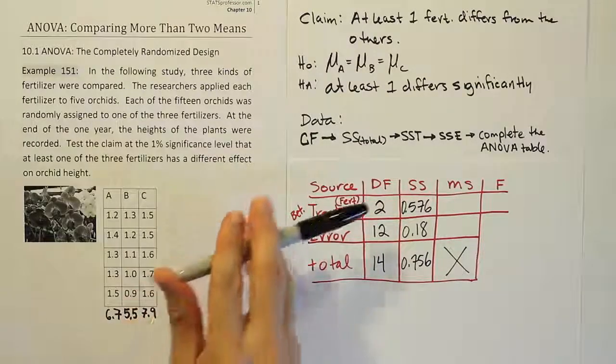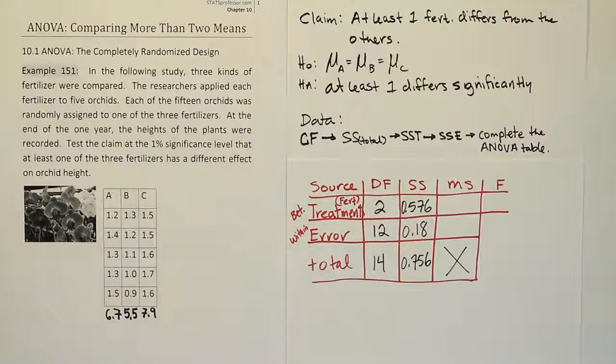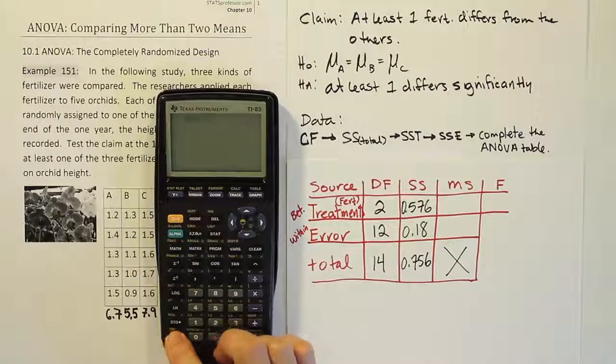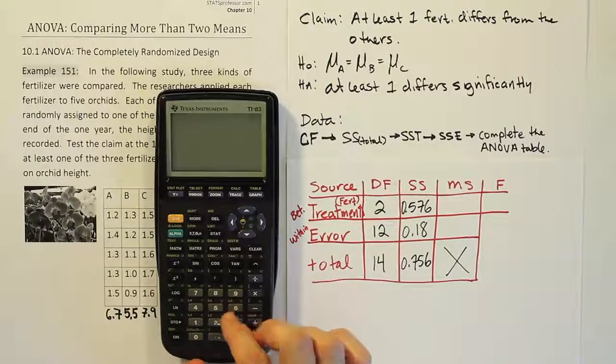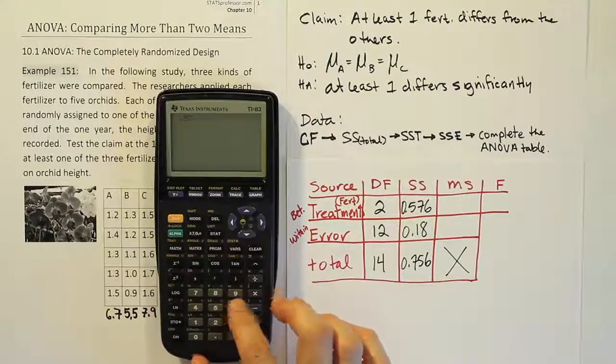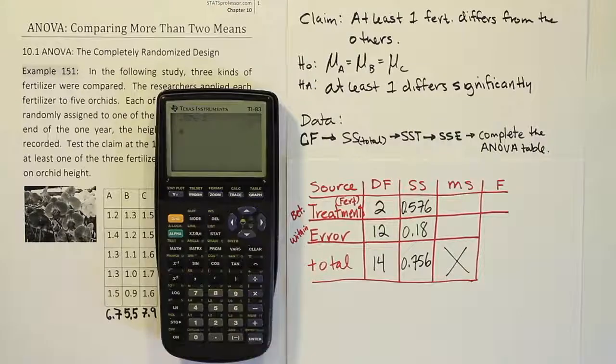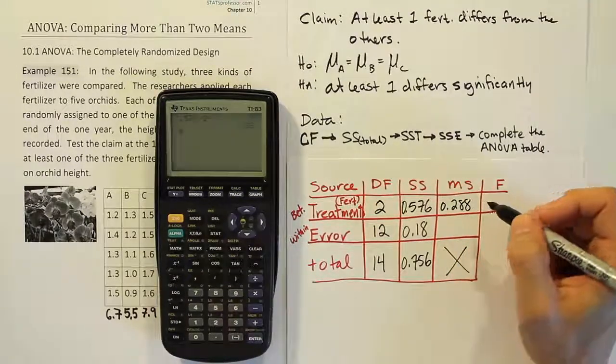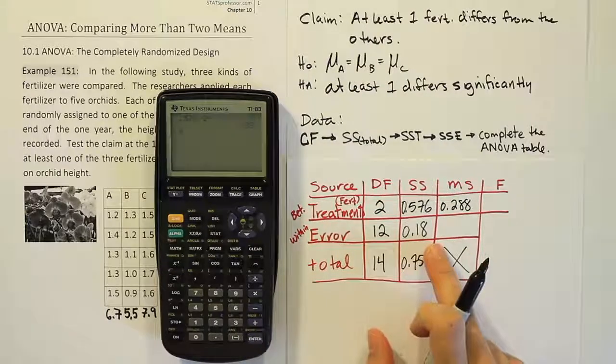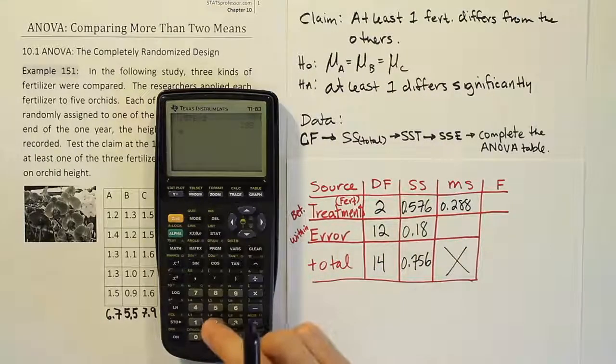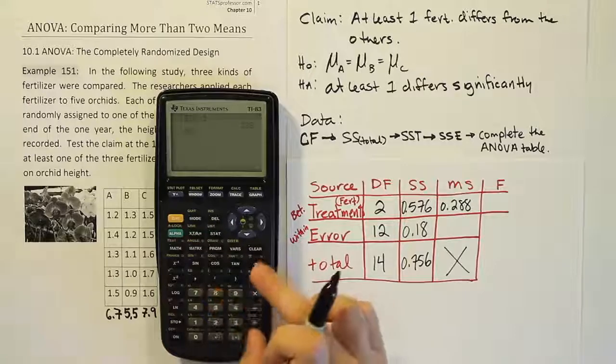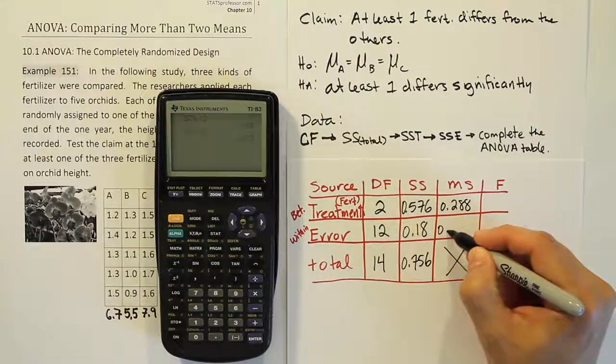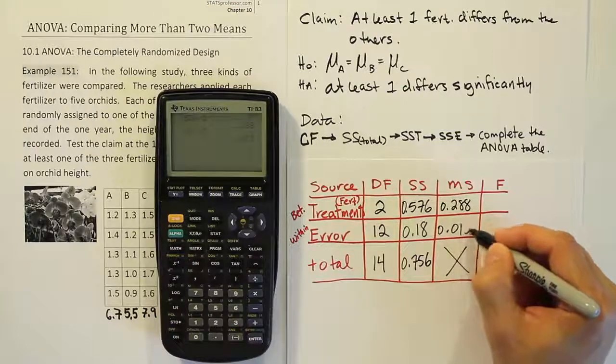So what we're going to do here is we're just going to do 2 into 0.576 to give us the mean square for treatments. So it's going to be, in this case, 0.576 divided in half. And we'll get the answer 0.288. So 0.288. We're going to do the same here, going straight across 12 into 0.18. So 0.18 divided by 12. And this is going to give us 0.015.